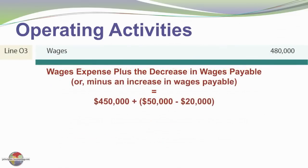We have another line in our cash flow statement for wages. We're showing wages paid of $480,000, even though the income statement only showed $450,000 as wage expense. We had a decrease in wages payable: beginning wages payable was $50,000 and ending was $20,000. So we used an additional $30,000 of cash to pay off pre-existing payables, making the net cash used for wages $480,000.